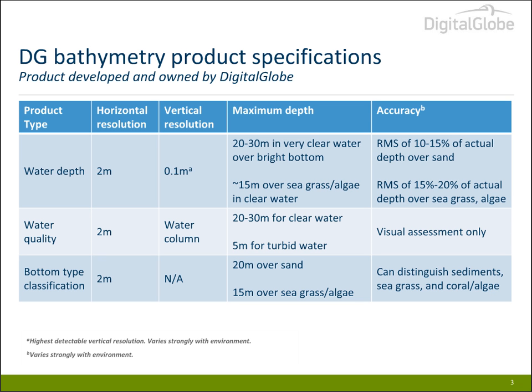In terms of accuracy, the RMS error is about 10 to 15 percent of the actual water depth over sand in clear waters. For clear waters over seagrasses, algae, or rocks, it's probably more in the 15 to 20 percent range of the actual water depth. The absolute error does increase with water depth. In regard to water quality, we have only performed visual assessment. And with regard to bottom type classification, we can distinguish sediments such as sand from seagrass, coral, or algae.